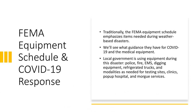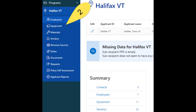Let's look at equipment now. Traditionally, the FEMA equipment schedule emphasizes stuff needed during weather-based disasters. We'll see what guidance they have for COVID-19 and medical equipment. Local government is using equipment during this disaster: police, fire, EMS, digging equipment, refrigerated trucks, and modalities needed for testing sites, clinics, pop-up hospitals, and morgue services. Equipment setup is under the Applicant menu.